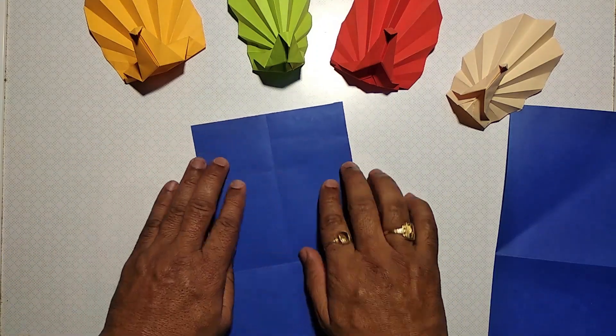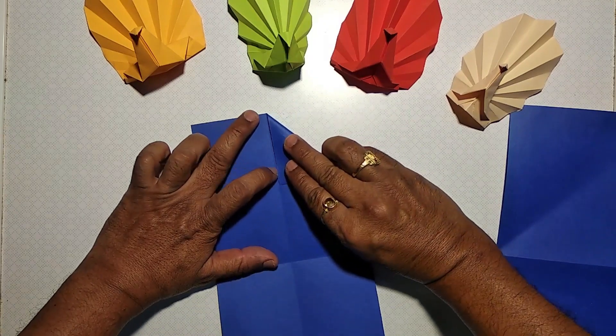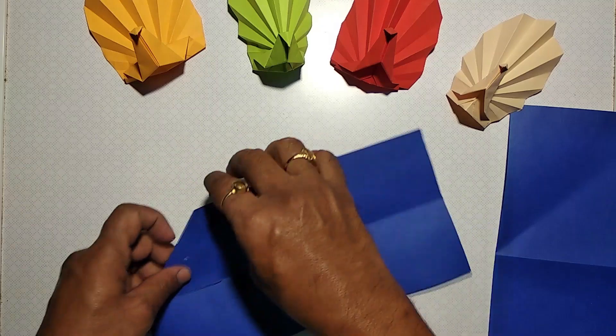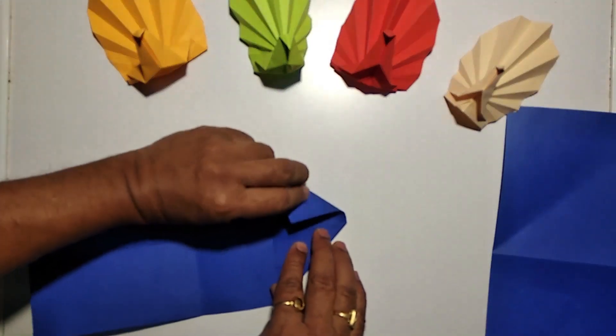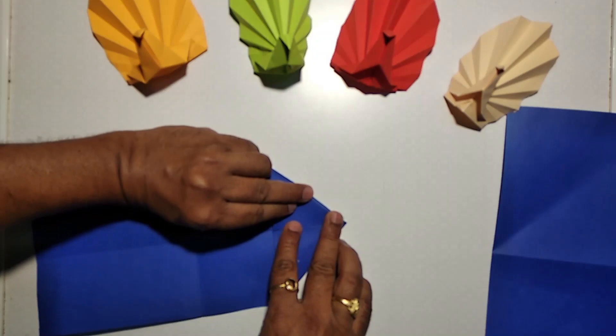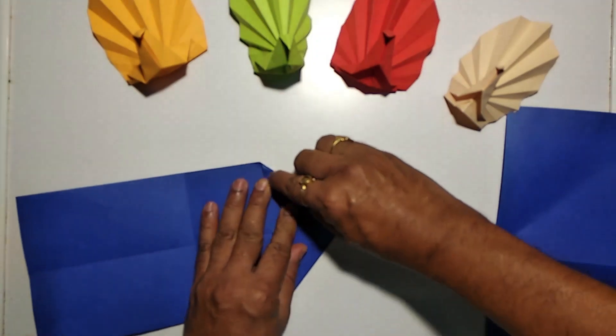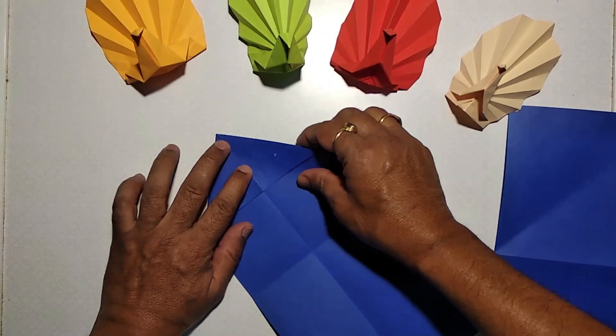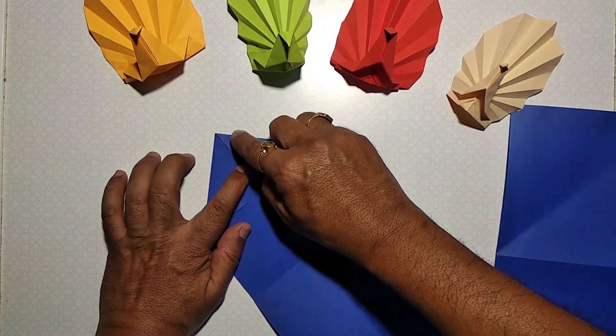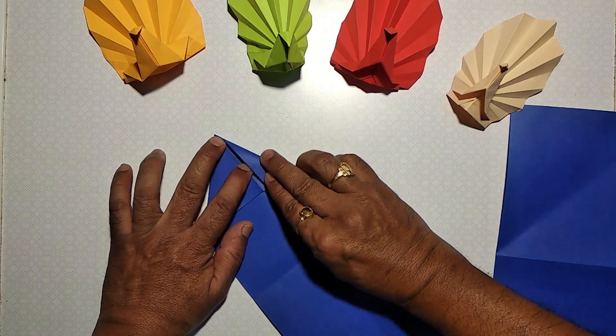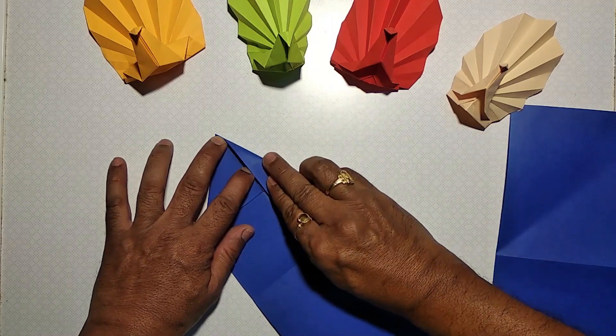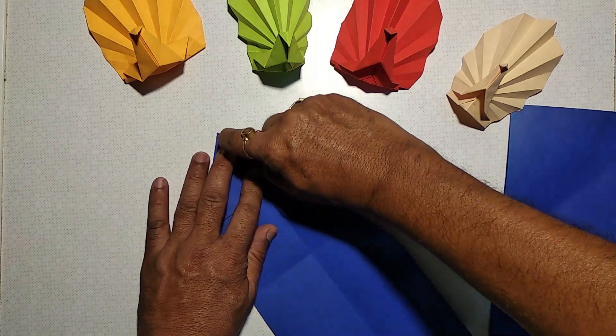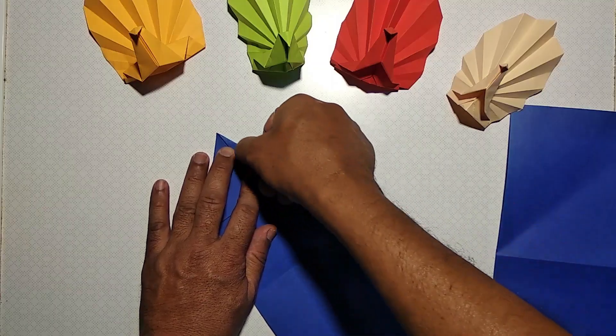On either side of this vertical fold, make right-angled isosceles triangles. These two triangles together make one more right-angled isosceles triangle. Again, bisecting that, make an acute-angled isosceles triangle on one side and repeat on the other side also.